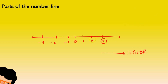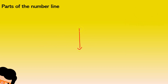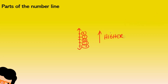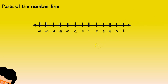So three is higher than two, two is higher than one, one is higher than zero. And you have to remember: zero is higher than minus one, minus one is higher than minus two, and minus two is higher than minus three. The same thing goes when you have a vertical number line. So two is higher than one, one is higher than zero, but zero is higher than minus one, and minus one is higher than minus two — because numbers that are above another number in the number line are higher.